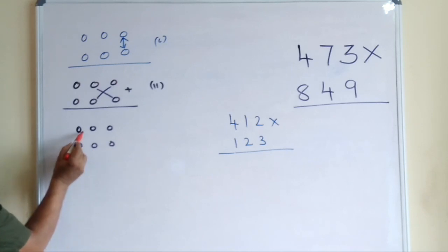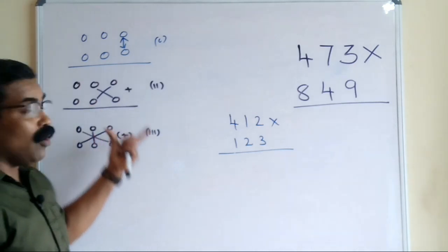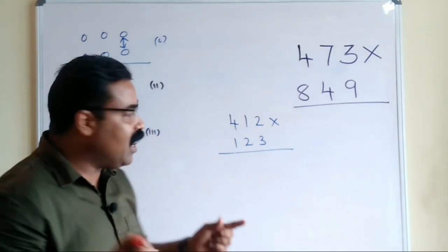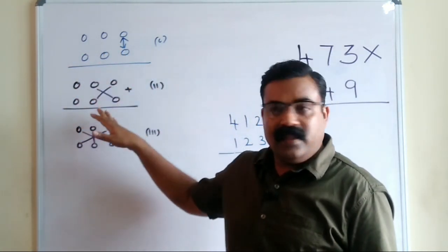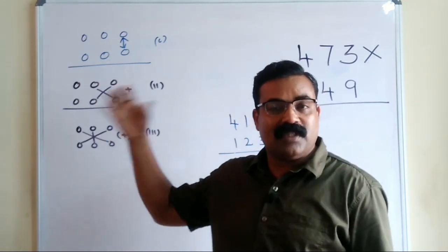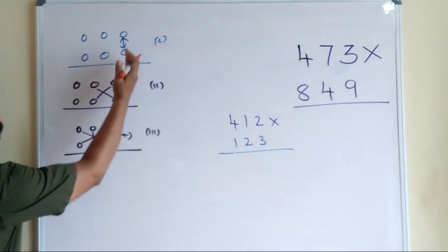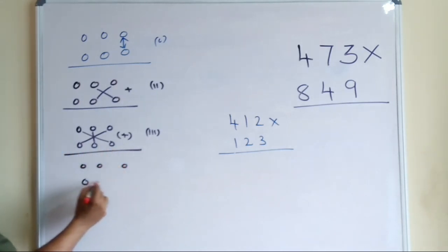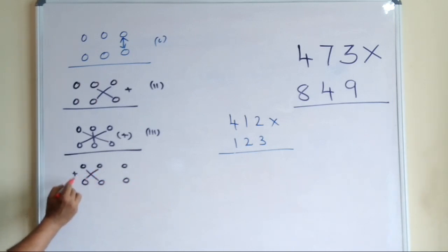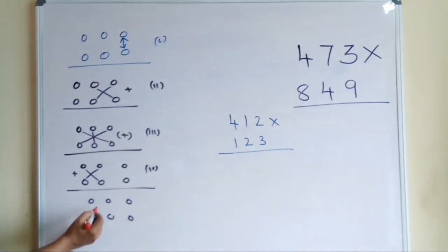The third step: for a three-digit number multiplied by three-digit number, you multiply the extreme digits, the extreme digits again, and the middle digits, then add all those results together. When I explain it now it may feel like a long process, but this is only for explanation purposes. Once you learn it, within seconds you can find the answer because you are keeping all the steps in your mind and applying them directly. The fourth step is cross multiplication of the next two digits and add. The fifth and final step is to multiply the leftmost two digits and write the answer.